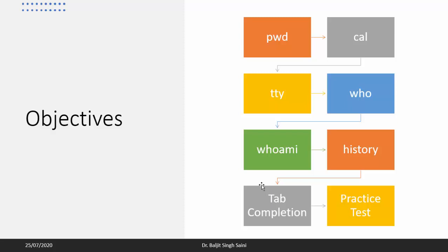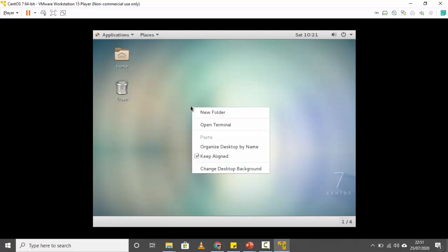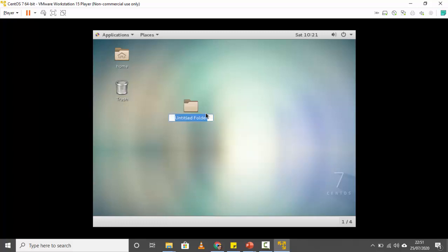The very first command is pwd. The pwd command prints your current working directory. Let's understand why pwd is important. If you are in the graphical user interface, you know what you are doing and where you are doing it. For example, if I right-click here and say 'New Folder' and type a name F1, I know I've created a folder on the desktop.